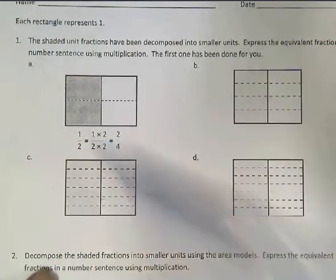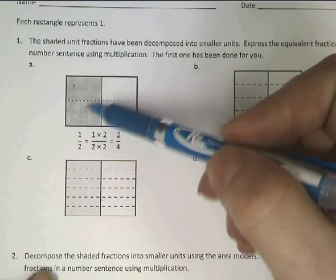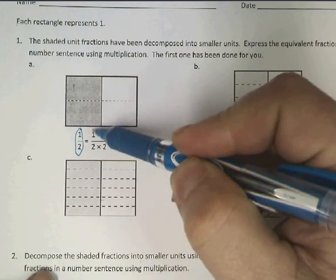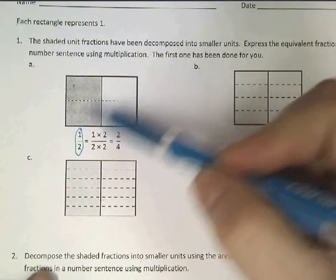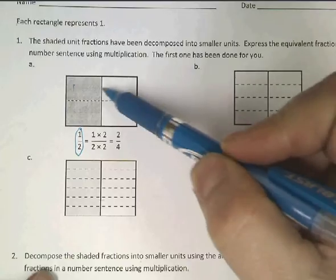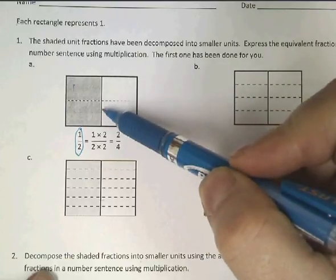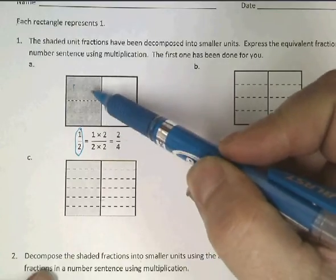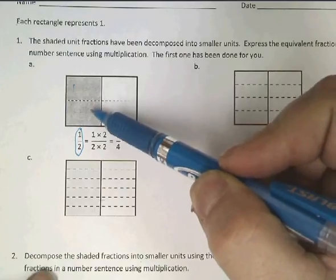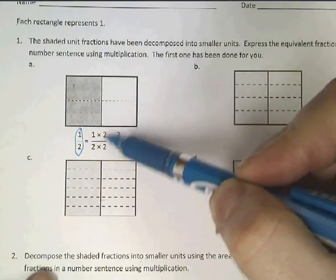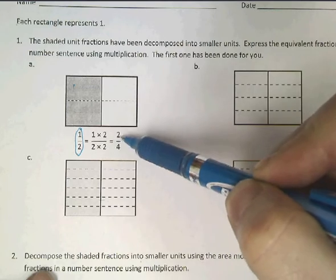The first one's been done for you, so they started out with half of it shaded. There's their first start: one half. And then one half, since we doubled the amount of units available and also doubled the amount of shaded units, we're going to multiply the top by two, the bottom by two, and there's our new fraction, two-fourths.